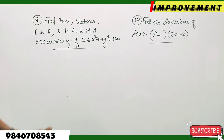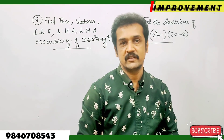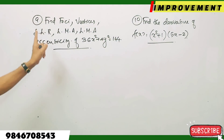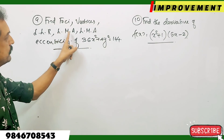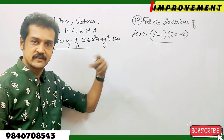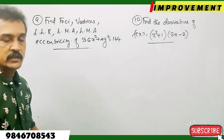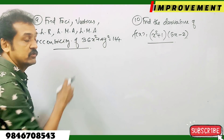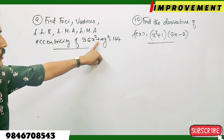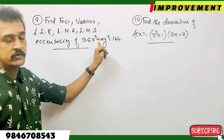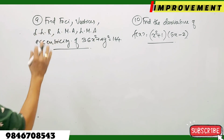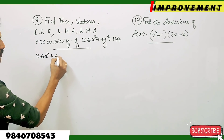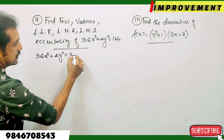The first question is about an ellipse. Find the foci, vertices, length of latus rectum, length of major axis, length of minor axis, and eccentricity of 36x squared plus 4y squared equals 144. This is an ellipse equation. Dividing through by 144 gives x squared by 4 plus y squared by 36 equals 1.